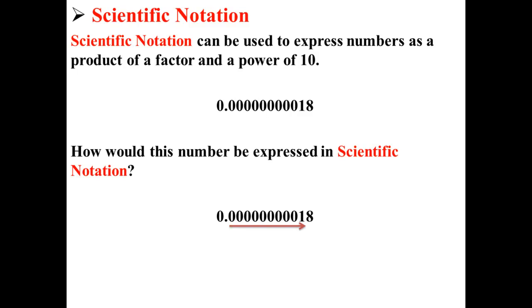In order to write this number in scientific notation, we move the decimal point over so that it includes one significant digit. Here we've moved the decimal point over 10 places. We've moved it 10 places to the right.